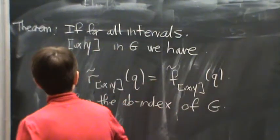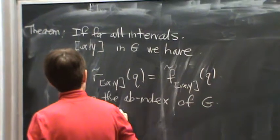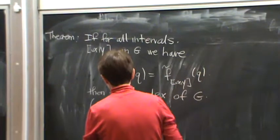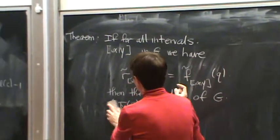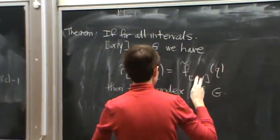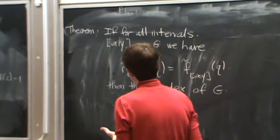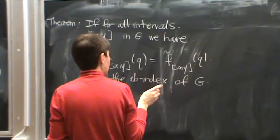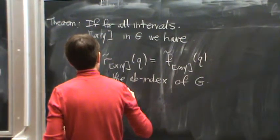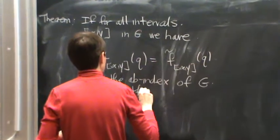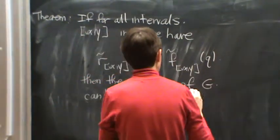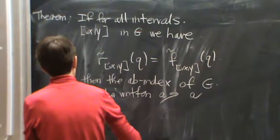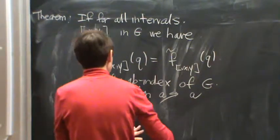is equal to the falling polynomial, then the ab index of g, which I never defined, okay, so of course, I just have the ab index of g. Well, I'm actually assuming I have a bottom and top element, so I'm going to leave this loose like this. Then the ab index of g, it's experimental, so I can add something, can be written